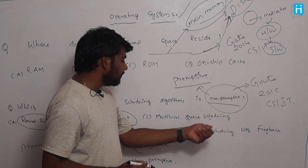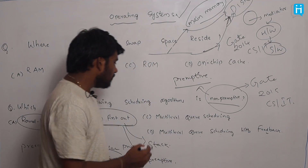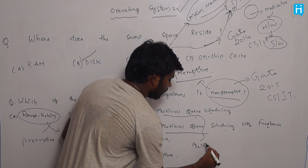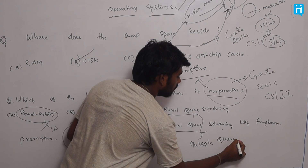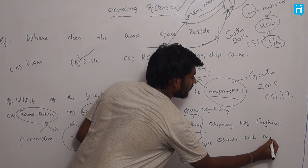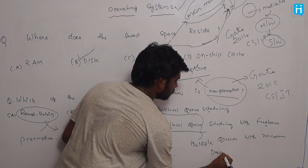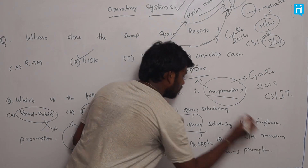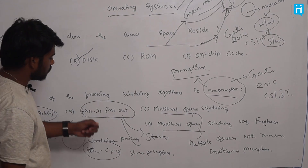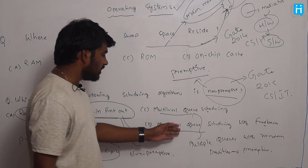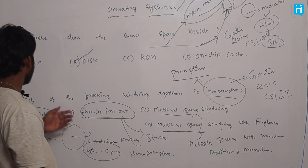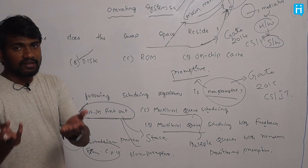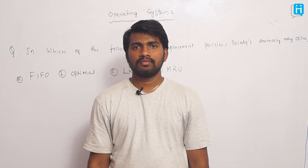Multi-level Queue Scheduling and Multi-level Queue Scheduling with Feedback have multiple queues with random priorities assigned, so they come under preemptive. So: Round Robin is preemptive, First In First Out is non-preemptive, and Multi-level Queue Scheduling as well as Multi-level Queue Scheduling with Feedback come under preemptive. The answer to which scheduling algorithm is non-preemptive is First In First Out.